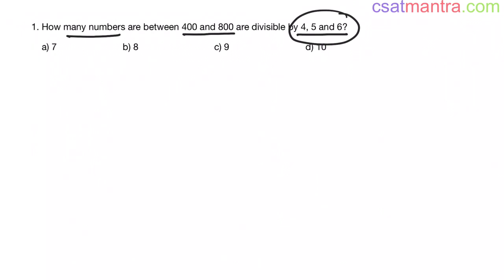Let's find the LCM of 4, 5, and 6. 4 equals 2 squared, 5 equals 5, 6 equals 2 times 3. Now LCM is the highest power of 2, which is 2 squared, and then we have 3 and then 5.